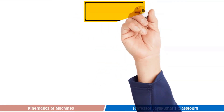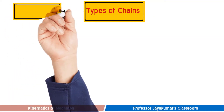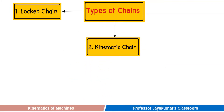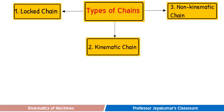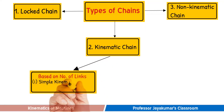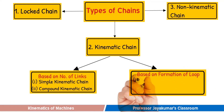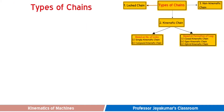Now we shall see different types of chains. Chains can be broadly classified under three types: locked chain, kinematic chain, and the third one being non-kinematic chain, also known as unconstrained chain. The kinematic chain in turn can be classified based on number of links as simple and compound kinematic chains, and based on formation of loops as closed, open, and hybrid kinematic chains.